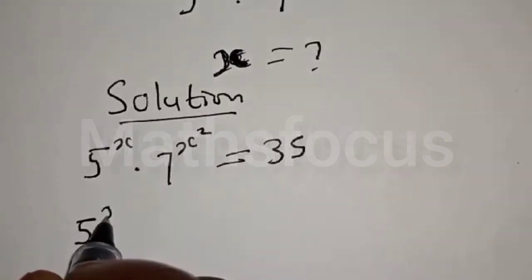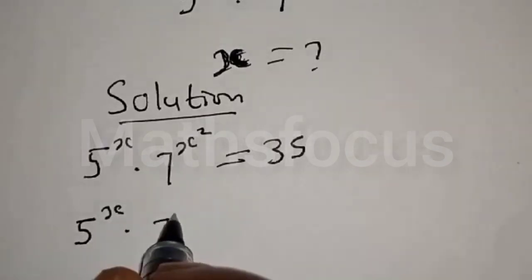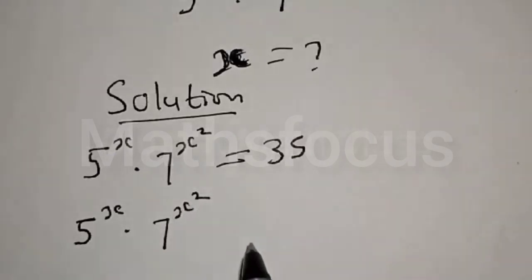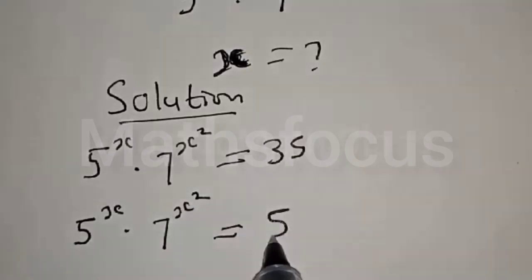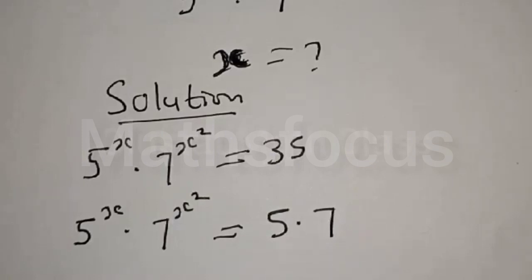5 raised to power x multiplied by 7 raised to power x squared is equal to 35, which is 5 multiplied by 7.